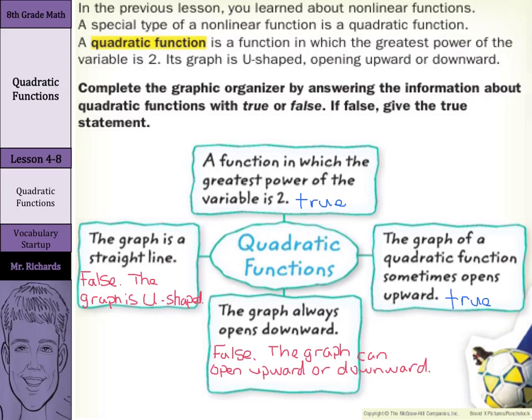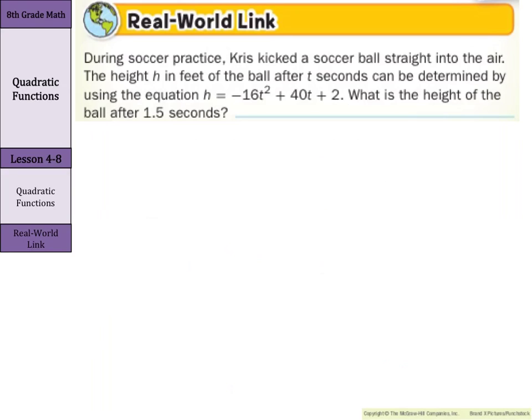Now that we know a little bit about quadratic functions, let's continue on. Our real-world link asks us: during soccer practice, Chris kicked a soccer ball straight into the air. The height h in feet of the ball after t seconds can be determined using the equation h equals negative 16t squared plus 40t plus 2. What is the height of the ball after 1.5 seconds? We're solving for height, so let's rewrite our equation: h equals negative 16t squared plus 40t plus 2.